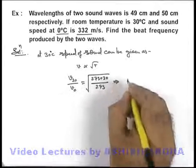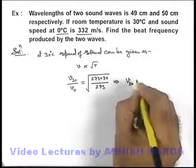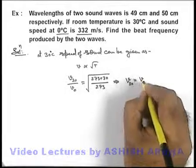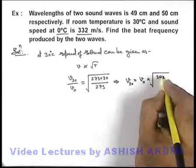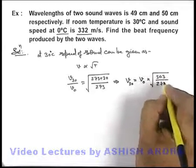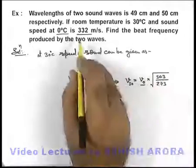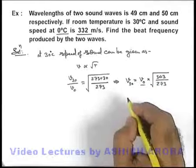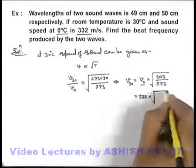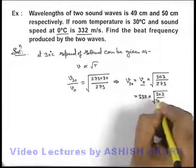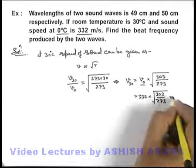Which will give us speed of sound at 30 degrees centigrade equal to speed of sound at zero multiplied by square root of 303 by 273. We substitute the speed of sound at zero as 332. This will be 332 multiplied by square root of 303 by 273 meters per second.